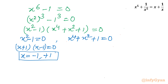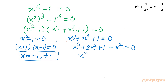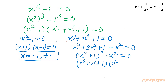For the second factor x power 4 plus x square plus 1 equal to 0, I will use a manipulation: write x power 4 plus 2x square plus 1 minus x square. From the first three terms it becomes (x square plus 1) whole square minus x square equal to 0. By difference of two squares: (x square plus x plus 1)(x square minus x plus 1) equal to 0.